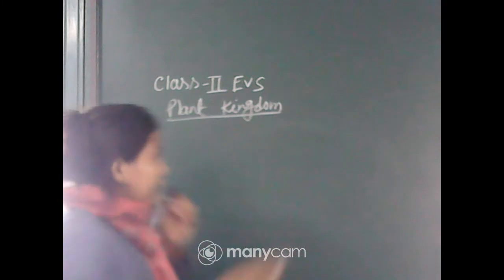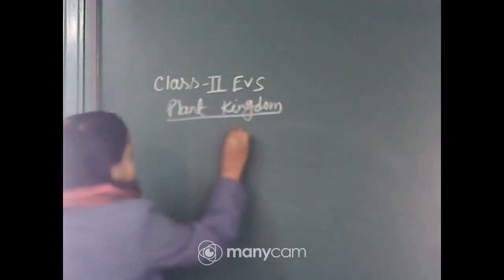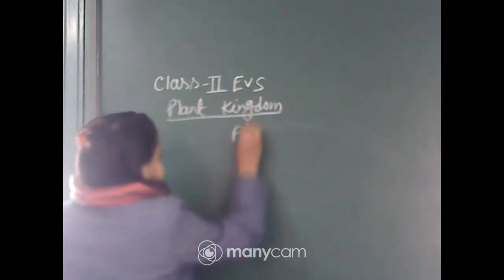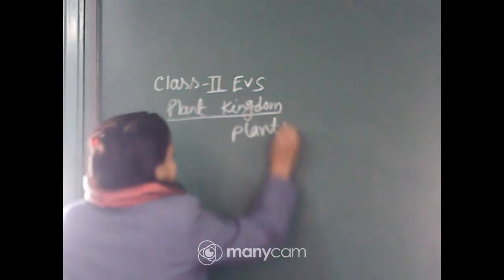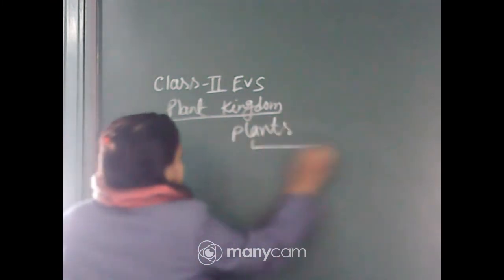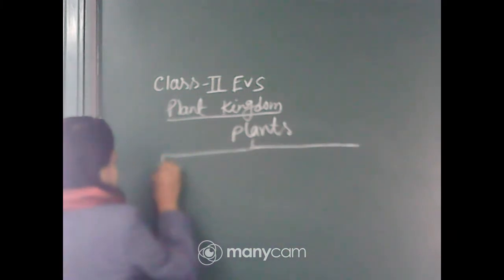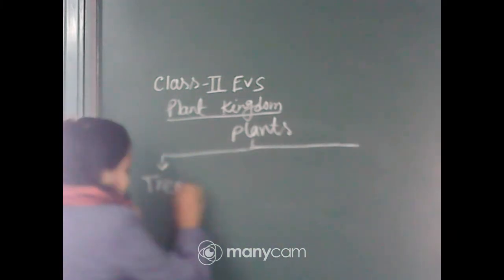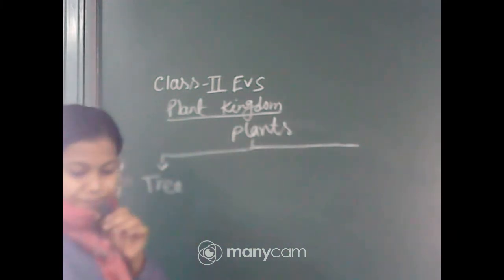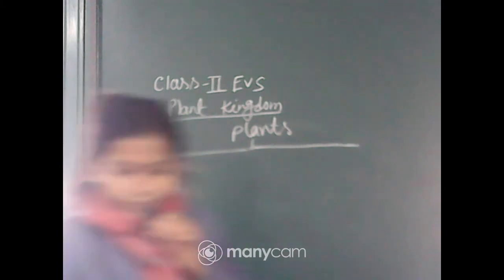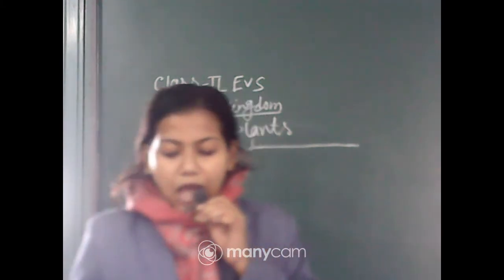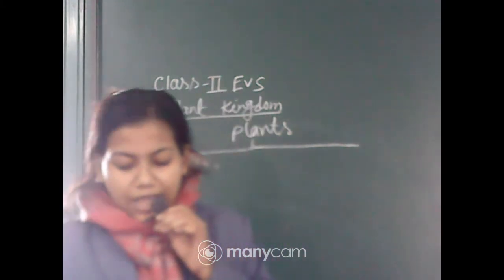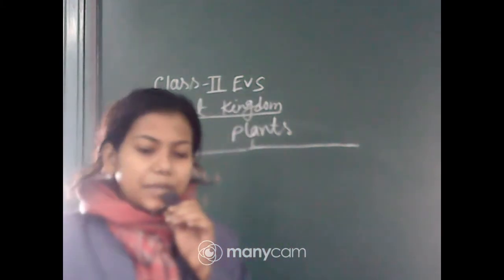Different types of plants include: tree, shrub, herb, climber, and creeper.